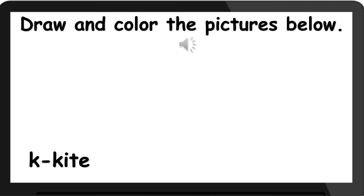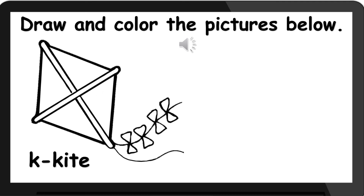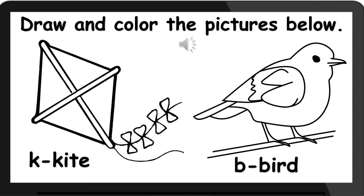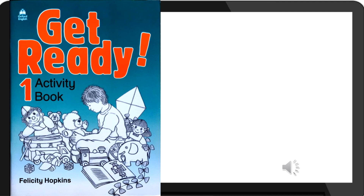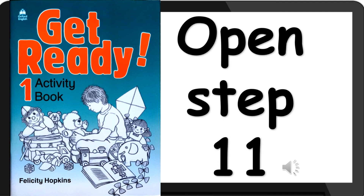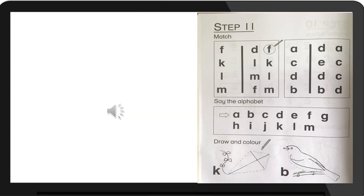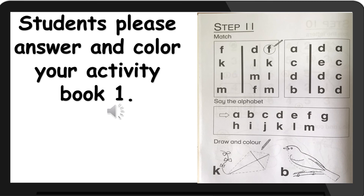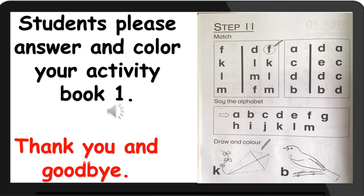K — Kite. Bird. Get ready your activity book one. Open page 11. Open page 11. Students, please answer and color your activity book one. Thank you and goodbye.